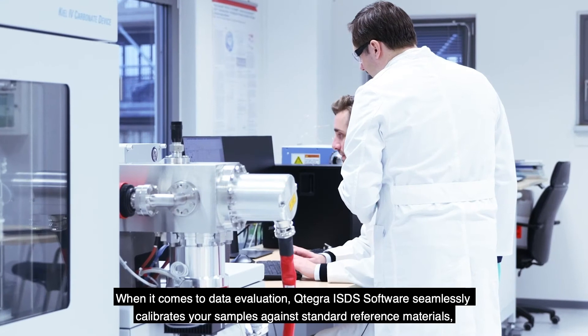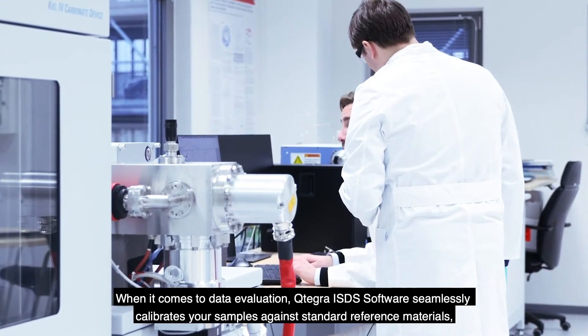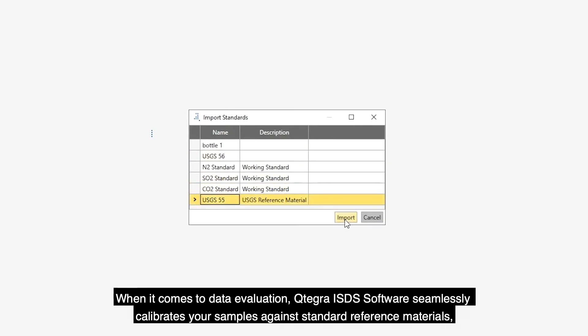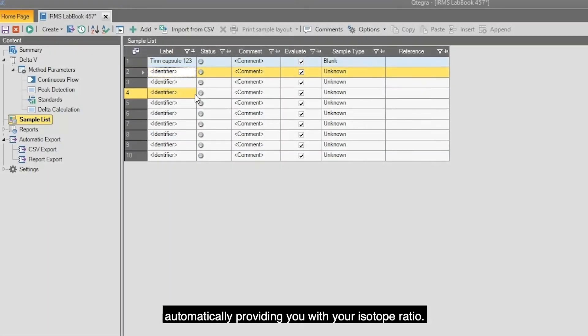When it comes to data evaluation, Qtegra ISDS Software seamlessly calibrates your samples against standard reference materials, automatically providing you with your isotope ratios.